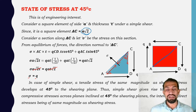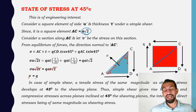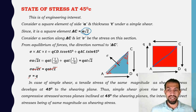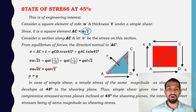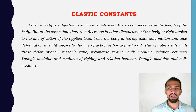In the case of simple shear, a tensile stress of the same magnitude as the shearing stress develops at 45 degrees to the shearing plane. Thus simple shear gives rise to tensile and compressive stresses across planes inclined at 45 degrees to the shearing planes, the intensity of direct stresses being of the same magnitude as the shearing stress itself.